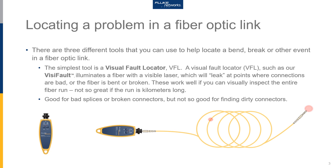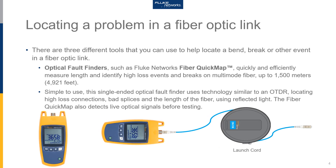This approach is good for bad splices or broken connectors, but not so good for finding dirty connections which may be causing higher losses or reflection issues with the fiber optic link. Another tool you can turn to is called an optical fault finder — from Fluke Networks, this is the FiberQuickMap. These tools allow you to quickly and efficiently locate problems, and they work on multi-mode fibers up to 1500 meters long, which is 4900 feet.